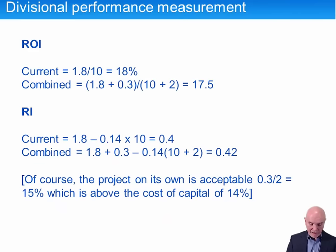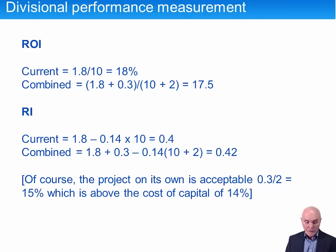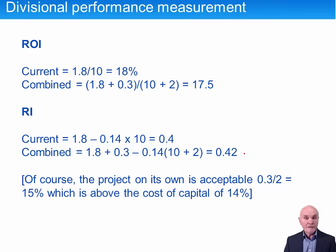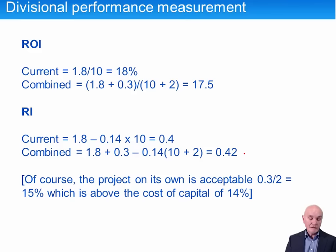On the summary slide: return on investment went from 18% down to 17.5%, while residual income went from £0.4m up to £0.42m. It is the residual income measure which tends to push the manager in the correct direction.